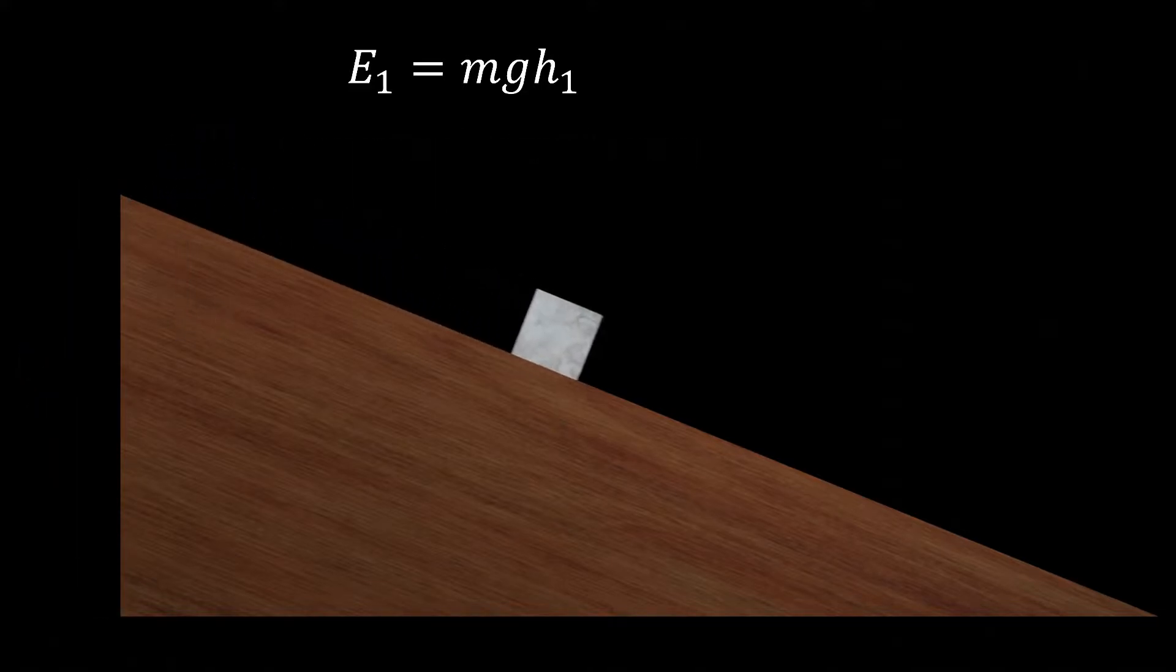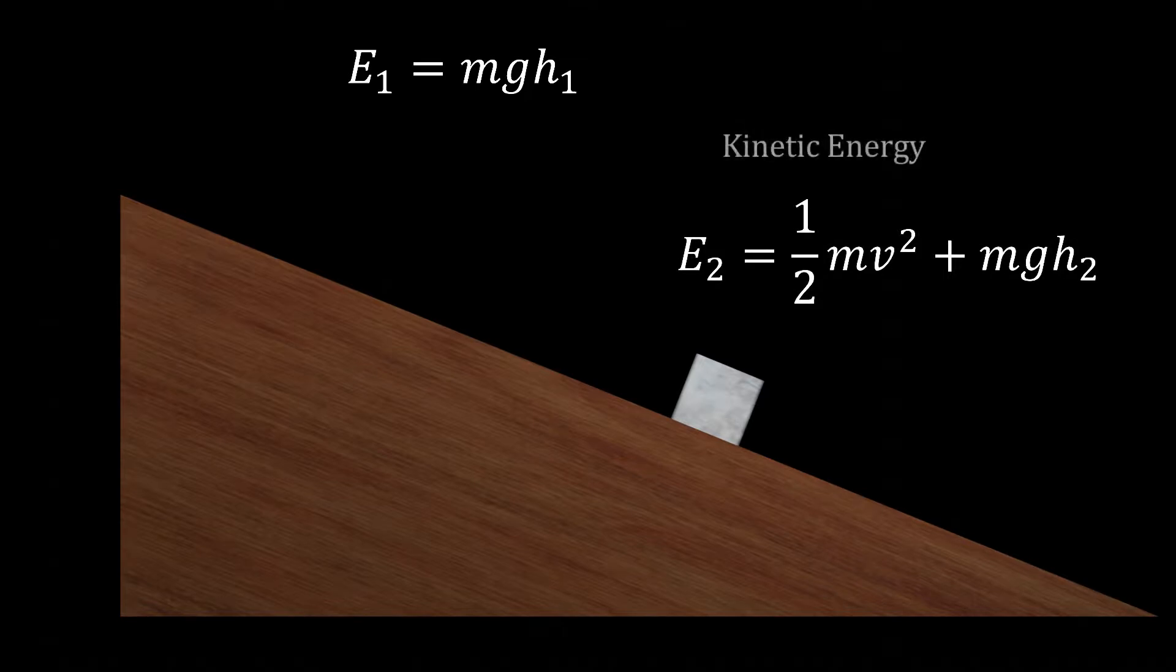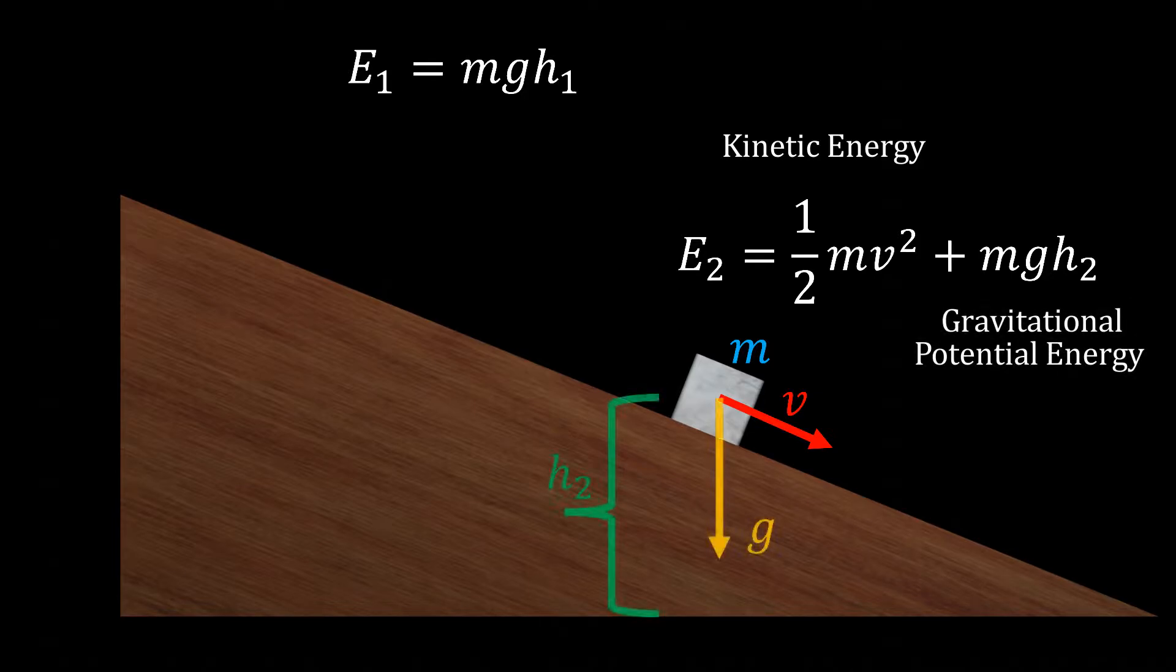After the block has slid some distance, now the block has two types of energy: kinetic energy, which is equal to one-half the mass times velocity squared, and a new, lower gravitational potential energy, mgh2.